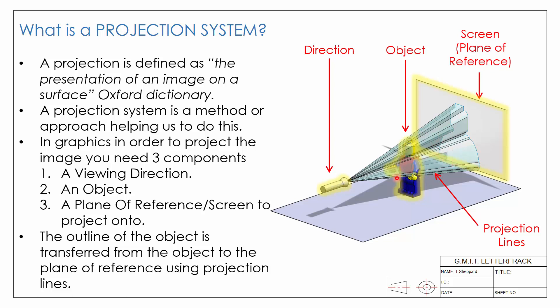This is our perspective projection. You can see the resulting image, and the size of that image is larger than the original object — that's what makes this perspective projection.